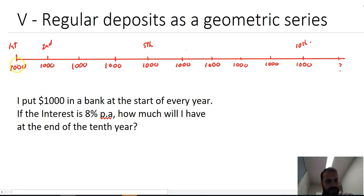I put $1,000 in at the start of the first year, $1,000 in at the start of the second, and so on, $1,000 in at the start of the fifth, $1,000 at the start of the 10th. And the question is, how much money will I have at the end of the 10th year? So the start of the 11th year, the end of the 10th year, it's the same thing.